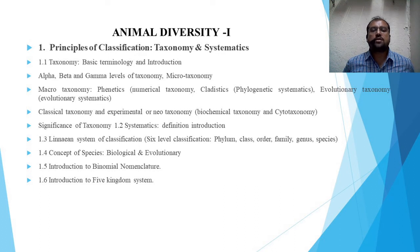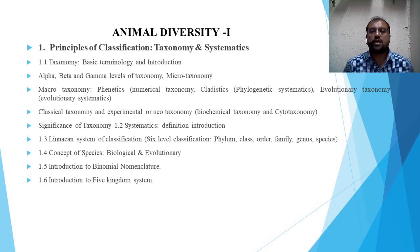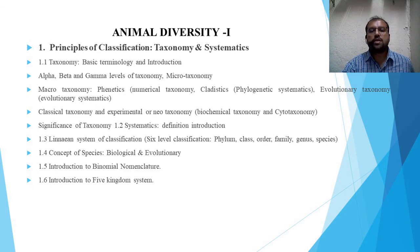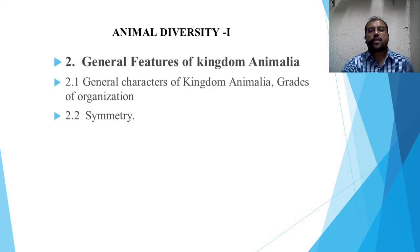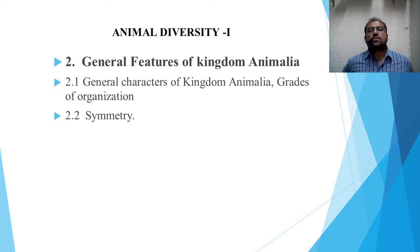The last sub-bit, the sixth sub-bit, is the introduction to the five kingdom system. These five kingdoms are Kingdom Monera, Protista, Fungi, Plantae, and Animalia. After this first topic, the second topic is general features of Kingdom Animalia, which includes the general characters of Kingdom Animalia along with the grades of organization, and the second bit deals with symmetry.